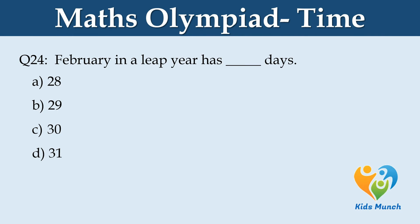February in a leap year has dash days. Option A: 28. Option B: 29. Option C: 30. Option D: 31.